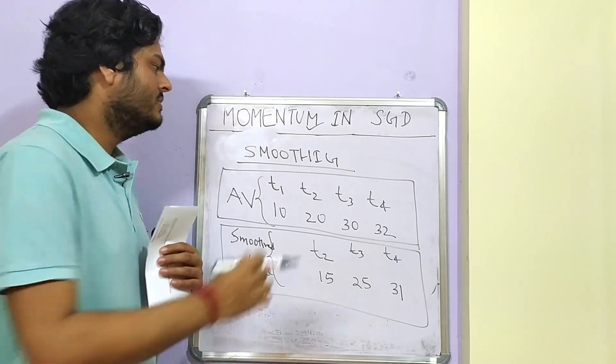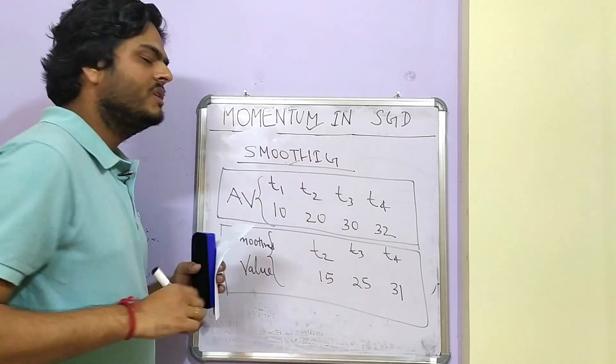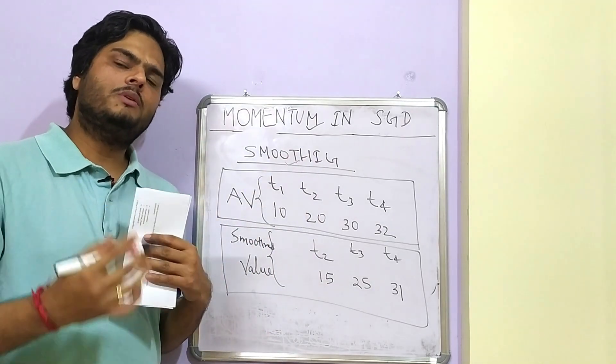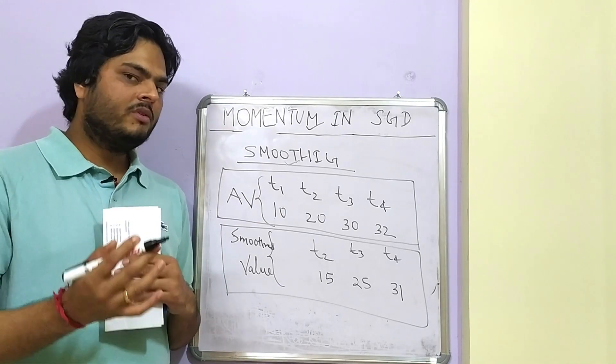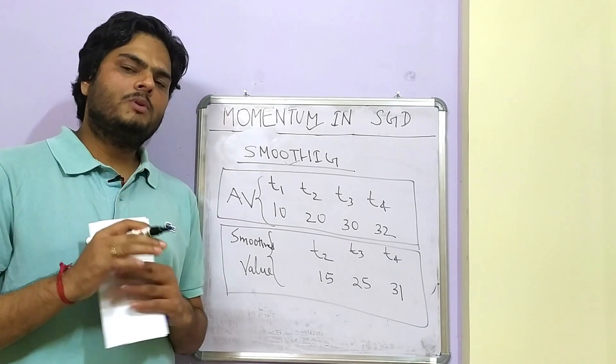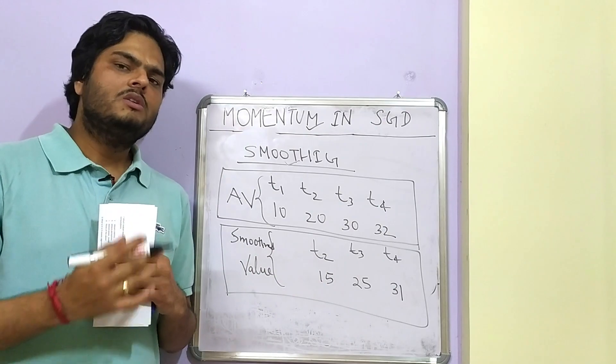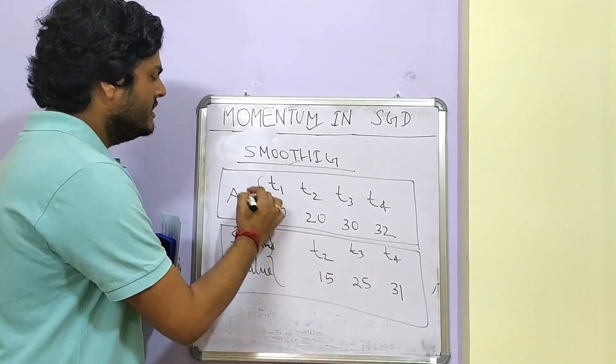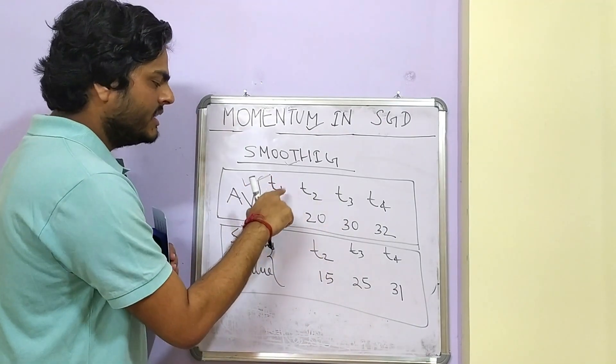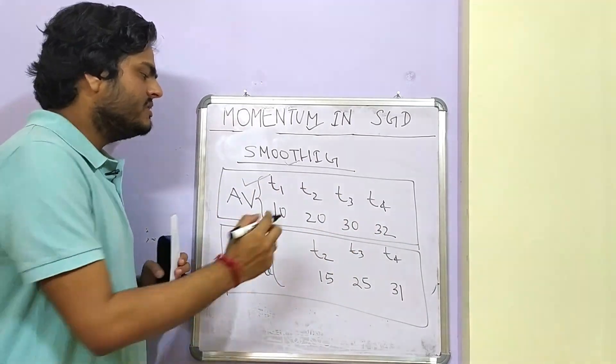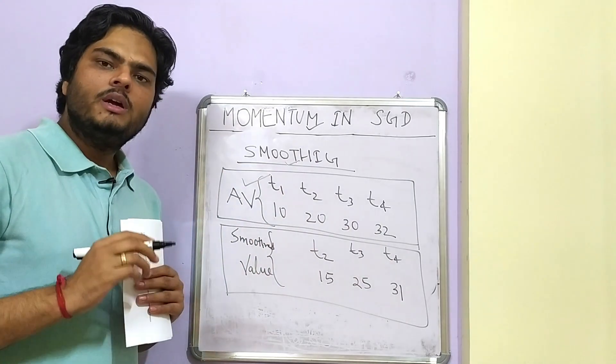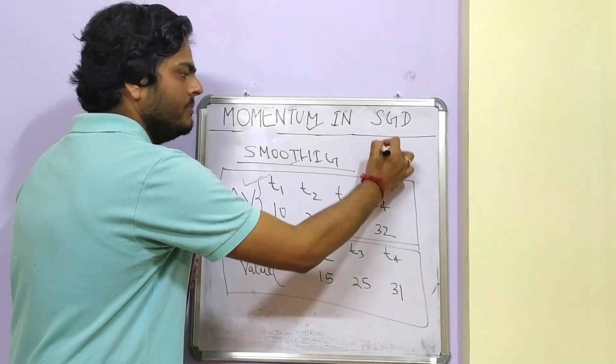Let us start with the concept of something known as smoothing. So what is smoothing? Have you heard of a model called ARIMA or auto regression model or moving average model? Let me tell you from the base what is smoothing. So let us say these are the stock prices of your favorite stock at time T1, T2, T3 and T4. So what are the prices? That is 10, 20, 30, 32.